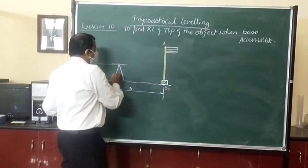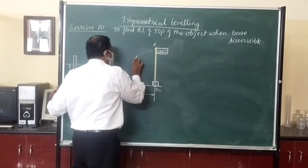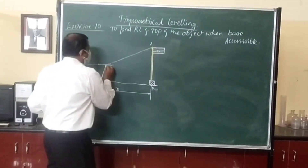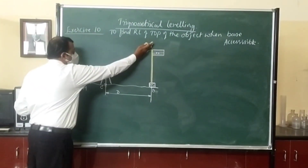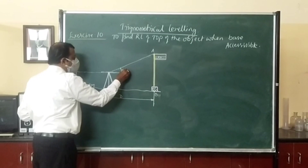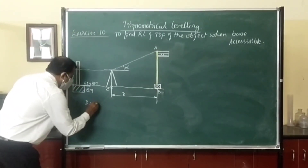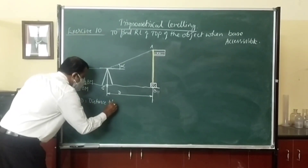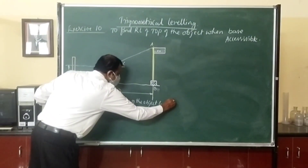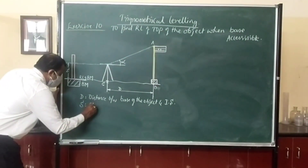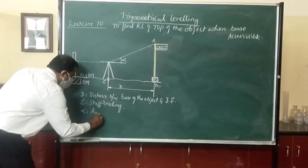From the theodolite, bisect station A — the top of the object whose RL we have to find — and note the vertical angle alpha. When you bisect station A, the line of sight is inclined upward. The field observations we have made are: D, the horizontal distance between the base of the object and the instrument station; S, the staff reading on the benchmark; and alpha, the angle of elevation.